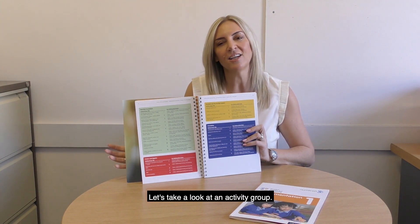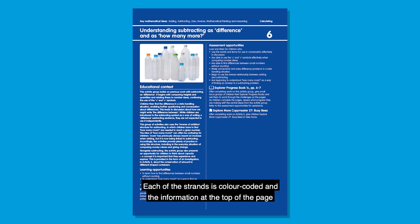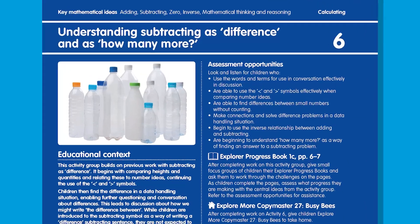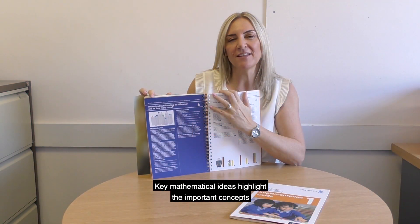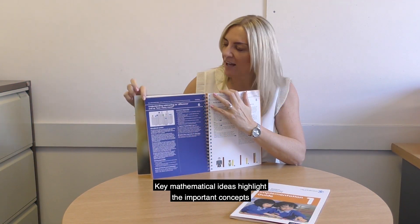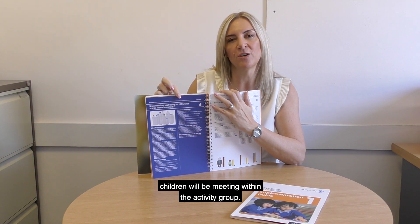Let's take a look at an activity group. Each of the strands is colour-coded and the information at the top of the page helps you easily identify the content of the activity group. Key mathematical ideas highlight the important concepts children will be meeting within the activity group.